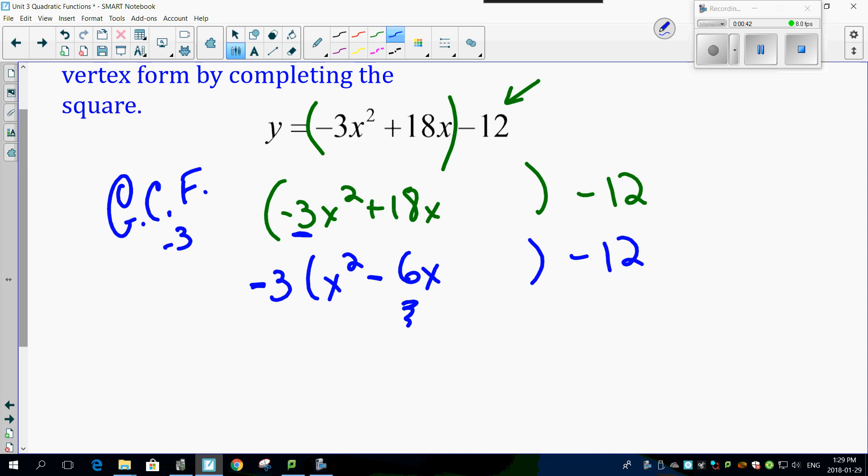Half of this becomes minus 3. Ah, magic number squared becomes positive 9, which means you have to get rid of the 9 out here, but don't forget...